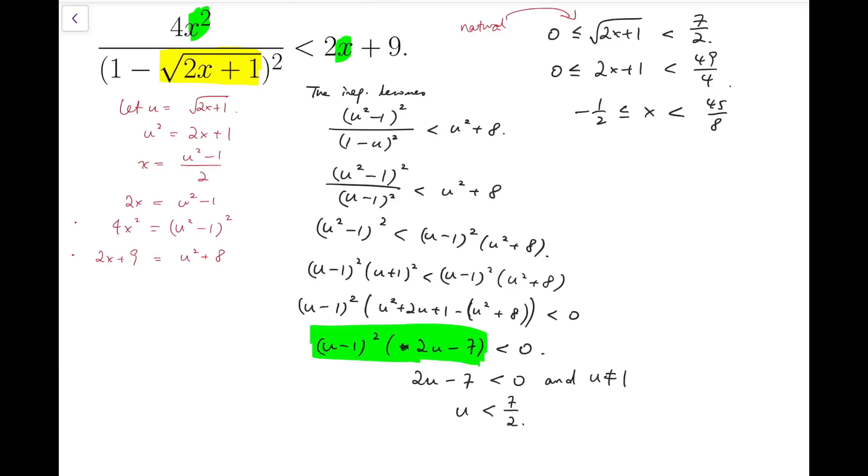Of course, because u cannot be 1, that means 2x plus 1 is not equal to 1. So x cannot be 0. So that means I need to reject the case that x is equal to 0. So I have to split this inequality. And so we'll have x to be between minus 1 half and 0 or between 0 and 45 over 8.